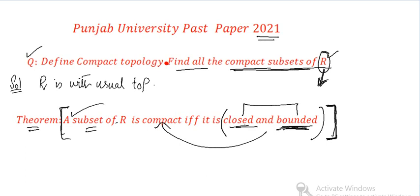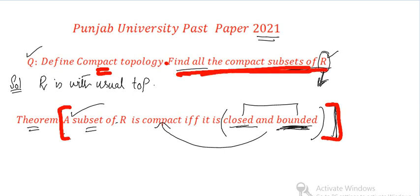If you are looking at marks, this question carries 6 marks. Just stating this theorem without proof will not get you 6 marks. The compact topology definition will be worth about 2 marks, and the rest — proving or explaining the compact subsets part — is about 4 to 5 marks. So in that explanation, you need to include the full theorem to score well.